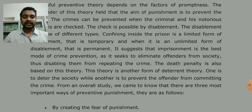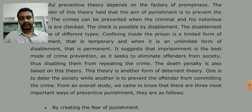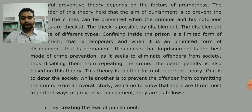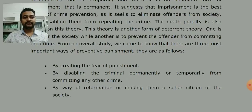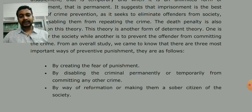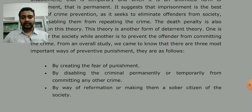From an overall study, we know there are three most important ways of preventive punishment. If you have doubts, post questions in the comment section and I'll reply as soon as possible. First: by creating the fear of punishment — people see that a criminal committed a crime and was put in jail, so they fear the same could happen to them. Second: by disabling the criminal permanently or temporarily from committing any other crime — once in jail, all their connections are cut, movement is restricted, they are disabled.